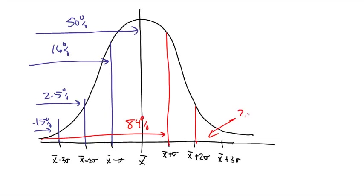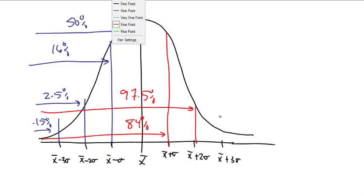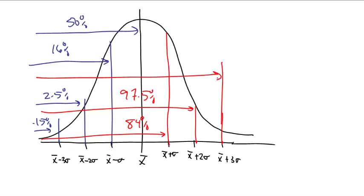And everything up to here is going to be, from 100, it's 97.5%. Everything up to there is 97.5%. And finally, everything up to here is everything up except the 0.15, which is 99.85%. That seems wrong. Nope, that is right. 99.85%.